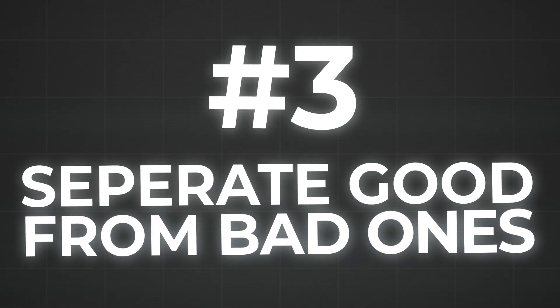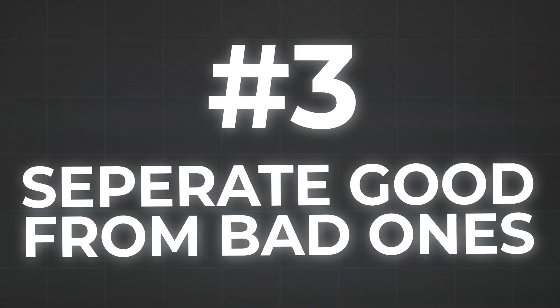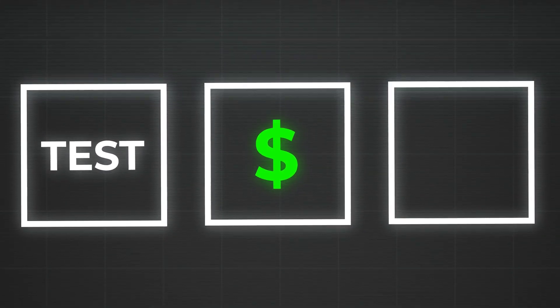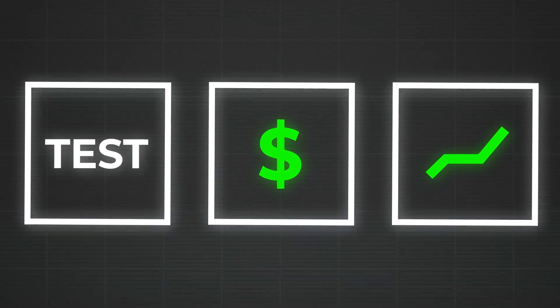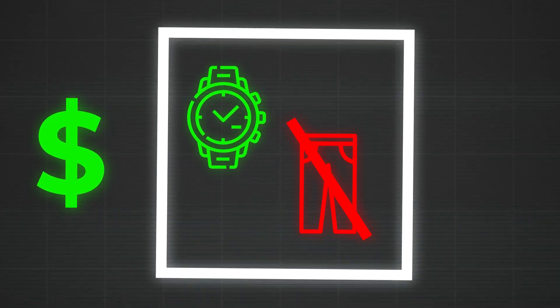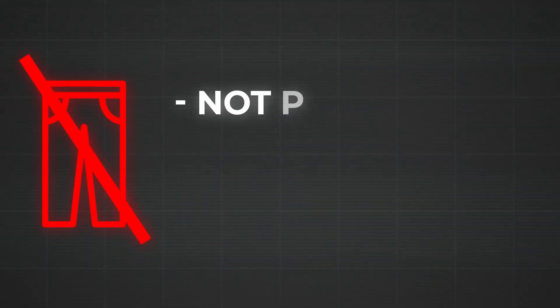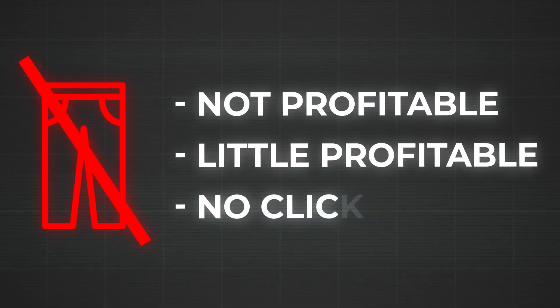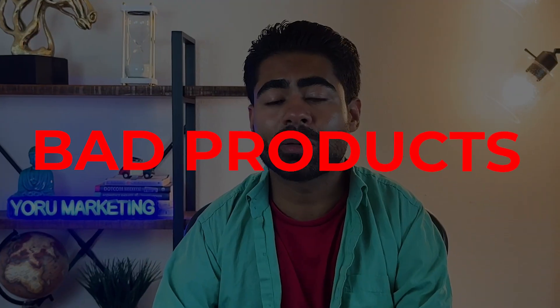This brings me to the third thing you can do right now: remove any bad products from your good product campaigns. This applies whether it's a testing campaign, a profitable products campaign, or a scaling campaign — you need to remove any bad products. When I say bad products, I'm referring to products that are unprofitable, on the verge of profitability, or eating up your impression share without getting any link clicks. These are what I classify as bad products.